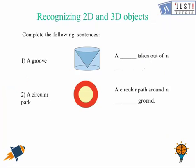So now let us try this question here. Here we need to complete the sentence. So for this one we need to find a dash taken out of. So inside it's a shape of cone and it is taken out of, the shape outside is of cylinder. So that's the answer. And in this one, a circular path around a dash ground. So a circular path around a circular ground since both are circular. So this is how you can try these questions by looking at the diagram.